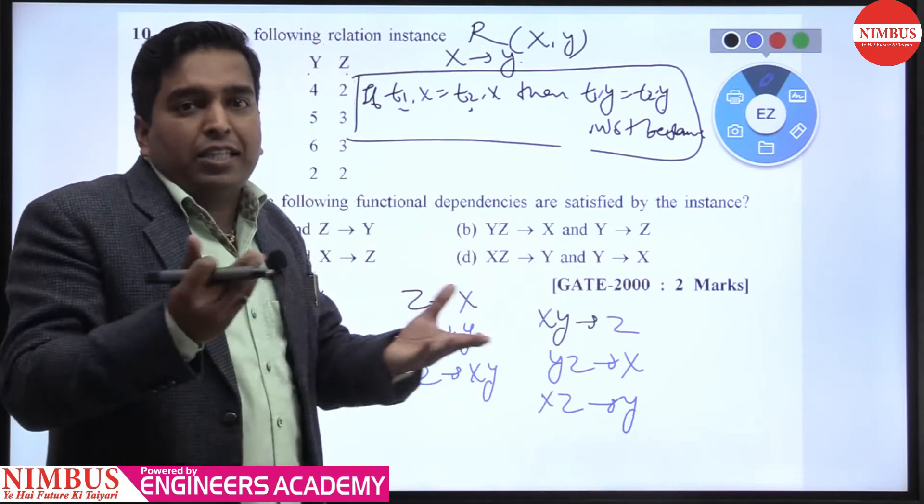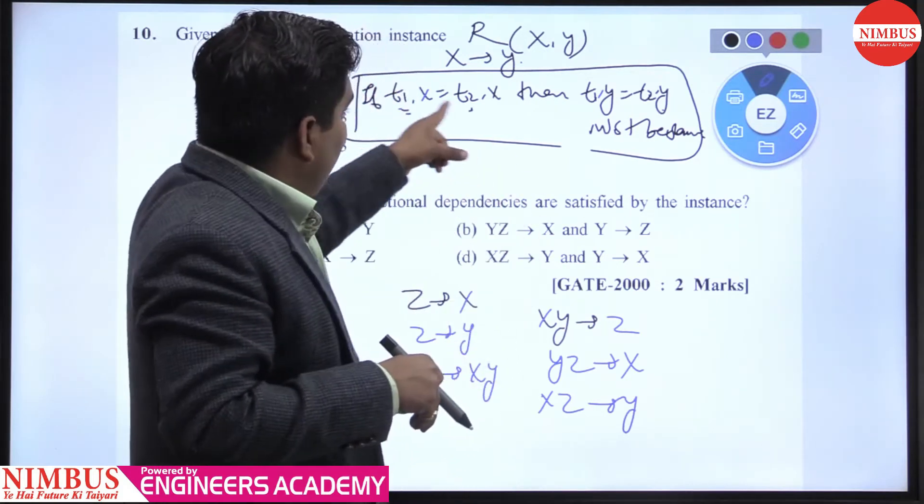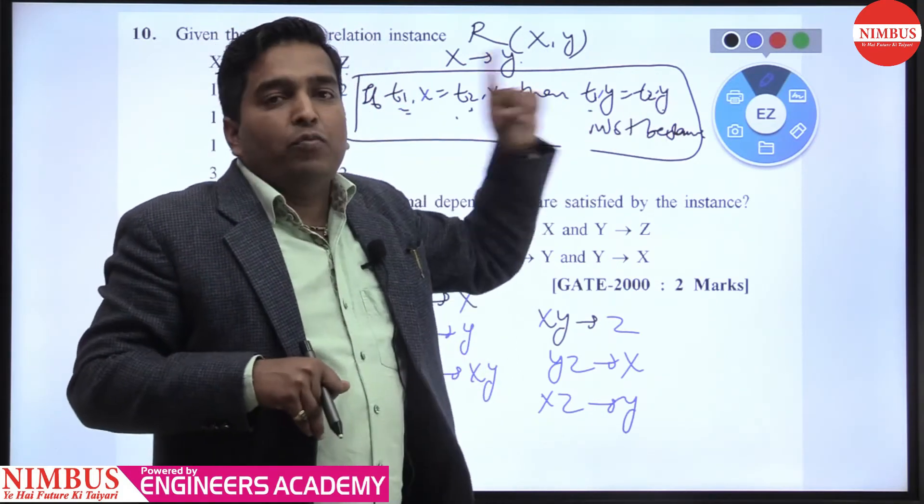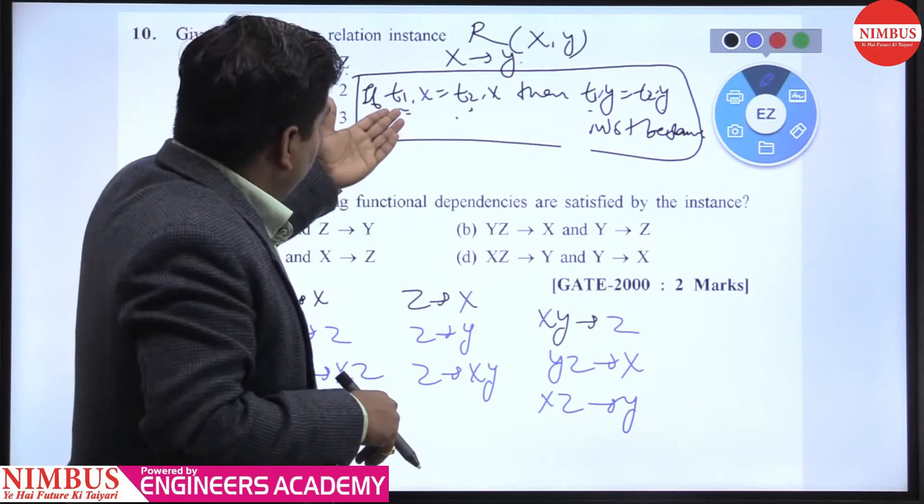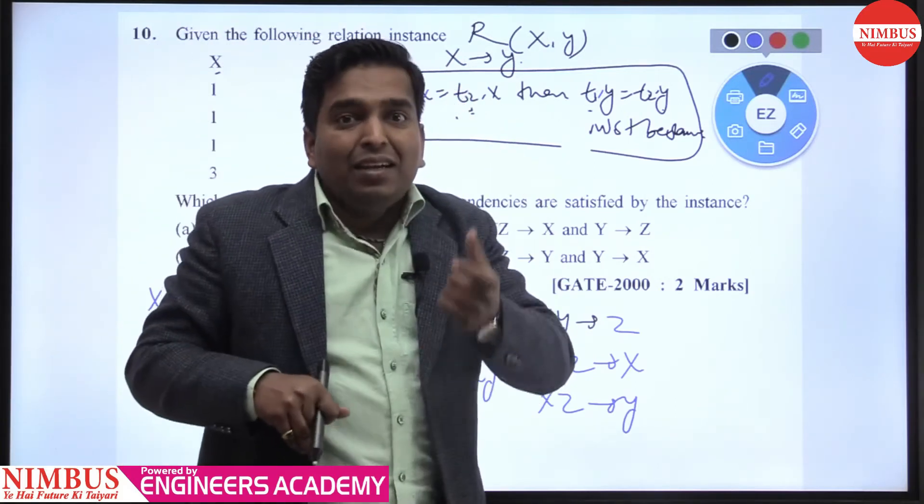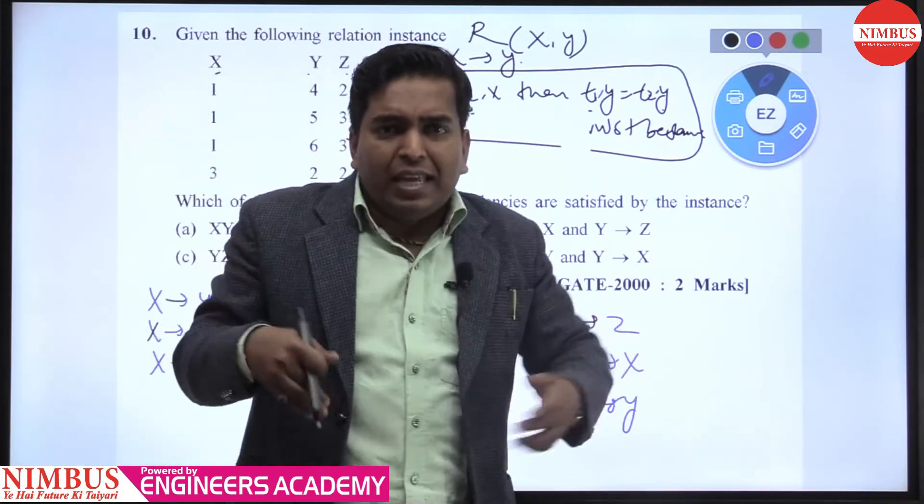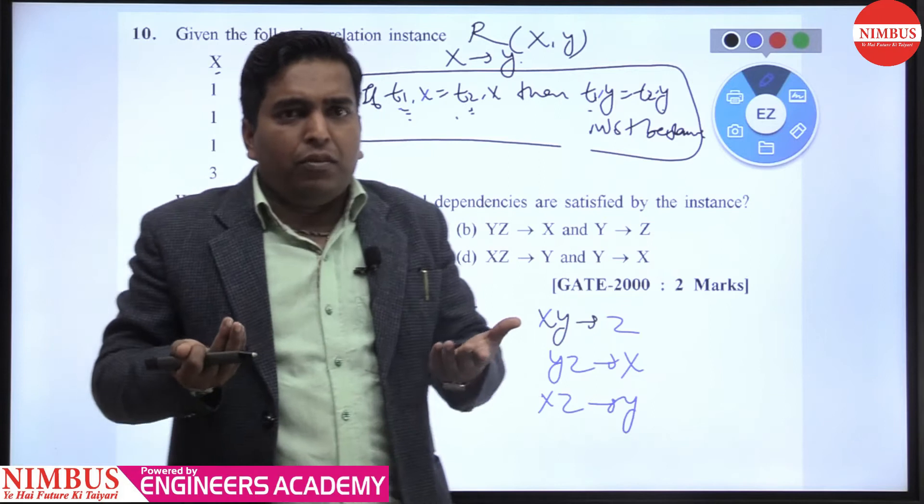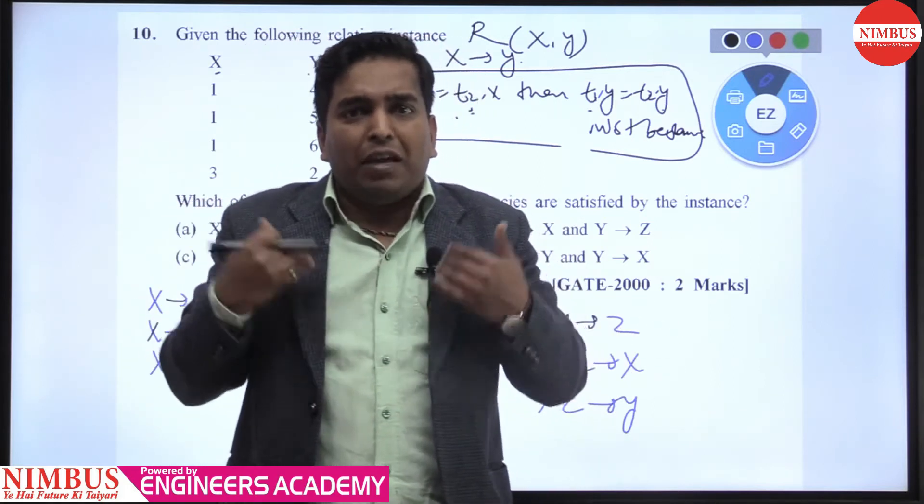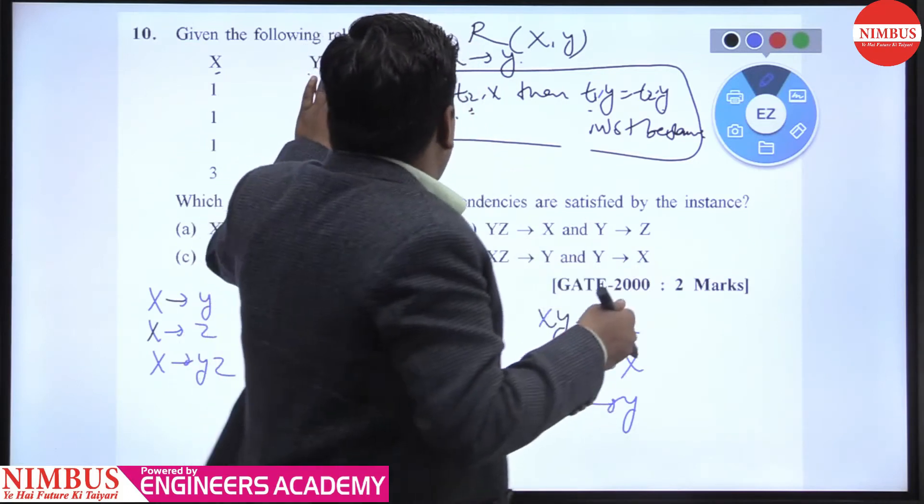Because whenever I ask students, they tell us X functionally determines Y. What is the function? X plus Y whole square? X cube plus Y cube? The function is: whenever X value repeats, corresponding Y value must be same. You can write in mathematical way also: T1.X equals T2.X, then T1.Y equals T2.Y must be same. You can also take a real-life example from itself: whenever my roll number comes, then my value repeats, my result will be displayed.